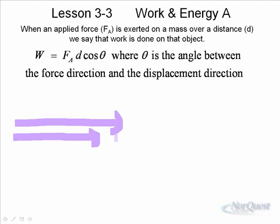Since in this case they're both in the same direction, the angle between them is zero. Because the angle is zero, then the cosine of zero is one, and one times any number gives you that number. So Fd times one would just be Fd. When they're both in the same direction, we don't worry about the angle.